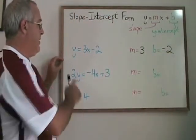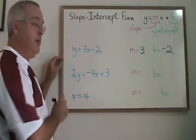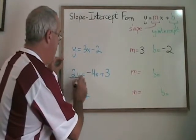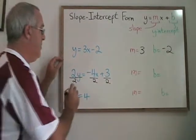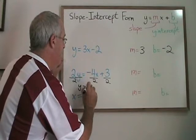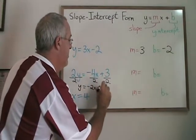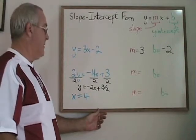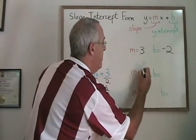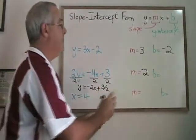In the second equation, y is not isolated yet because it has a 2 with it, but if I divide all terms in the equation by 2, I can turn this equation into y equals negative 2x plus 3 halves. And now I can read out my slope and my y-intercept. The slope is equal to negative 2, and the y-intercept is 3 halves.